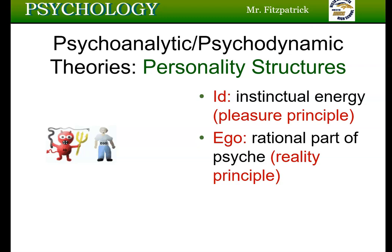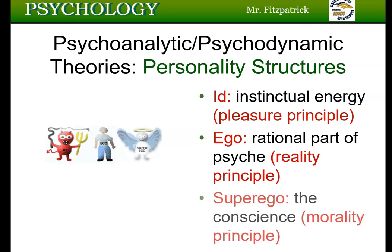The last part of the personality structure to develop is the superego. It develops from internalized parental and societal standards and strives for perfection. Therefore it's unrealistic, like the id. Since it has this conscience element, it operates under the morality principle.